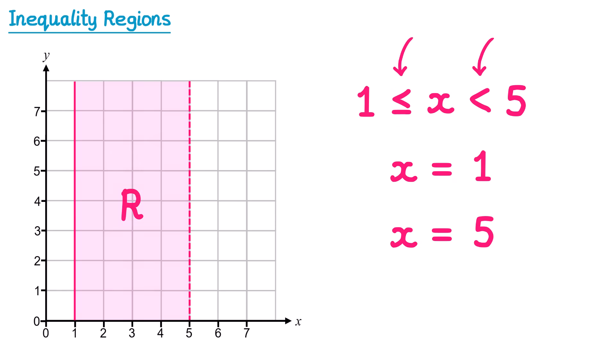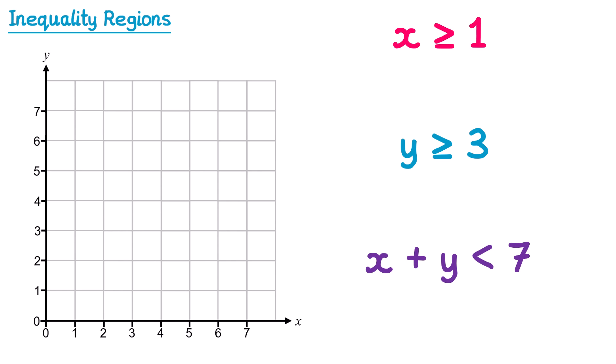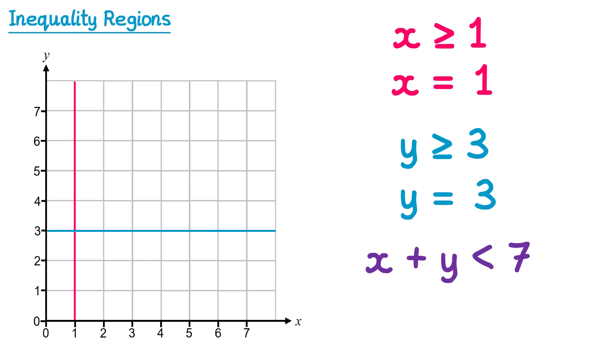In an exam question you're likely to be given multiple inequalities on the same diagram — for instance three inequalities. For x ≥ 1 we draw the vertical line x = 1. For y ≥ 3 we draw the horizontal line y = 3. For x + y < 7 we draw the line x + y = 7, which crosses through (0, 7) and (7, 0). Since this is strictly less than, we use a dotted line for that one.